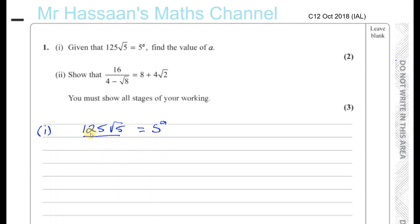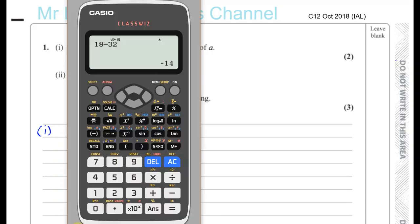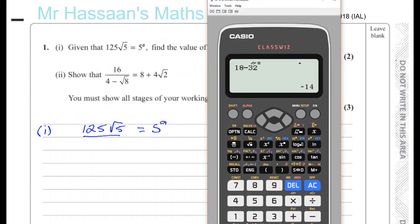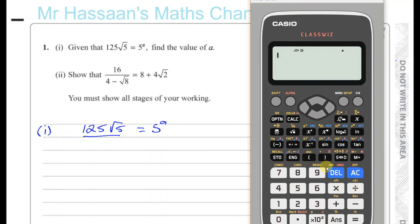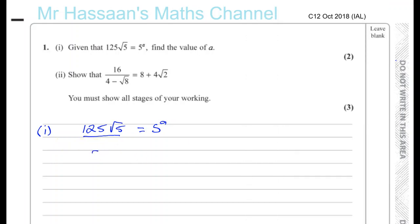So let's now change this so it's five to the power of something. Now 125 is five cubed. If you're not sure, you can just make sure using your calculator. But basically we know five squared is 25, five cubed is 125. And the square root of five is the same as five to the power of a half. So I can write this as five cubed times five to the power of a half.